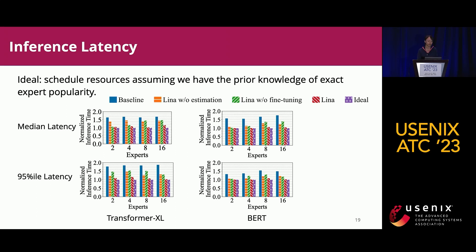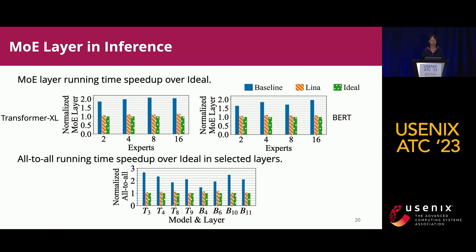For inference latency, we measure both median latency and 95th percentile tail latency, comparing LENA's design choices against baseline and an ideal result — the ideal being performance when we have prior knowledge of exact expert popularity and can conduct zero-overhead perfect resource allocation. The full version of LENA with both phase one estimation and phase two fine-tuning achieves similar performance to the ideal results, indicating that LENA's resource allocation effectively balances load among devices. The same observation holds for MOE layer running time and all-to-all communication time in evaluated layers.